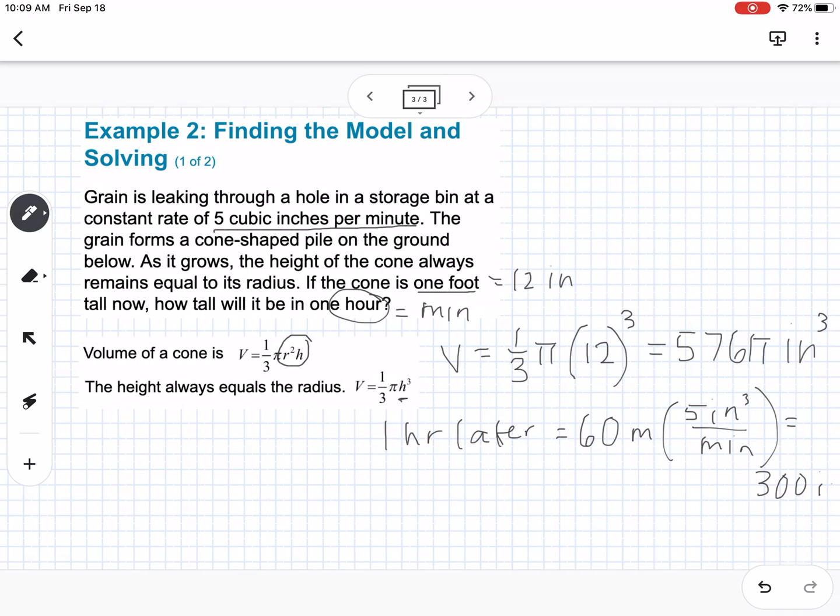So we want to know our total volume now is going to be, we're going to take the 576 pi and we're going to add it to 300. So that would be 576 pi plus 300 gives us 2,109.56 inches cubed. So that's our total volume.